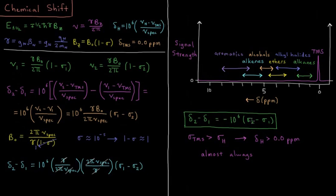As I mentioned in the previous video, because the shielding of TMS, our reference, is so high, it's almost always going to be greater than the shielding in any given hydrogen nucleus we encounter. So that means that our chemical shift of our given hydrogen nucleus is almost always going to be greater than zero parts per million.